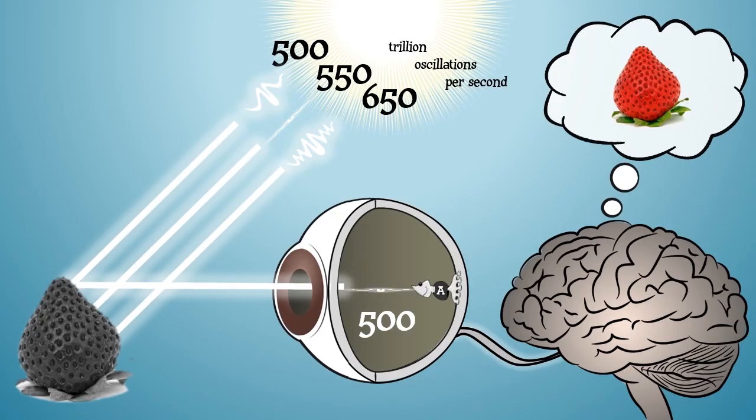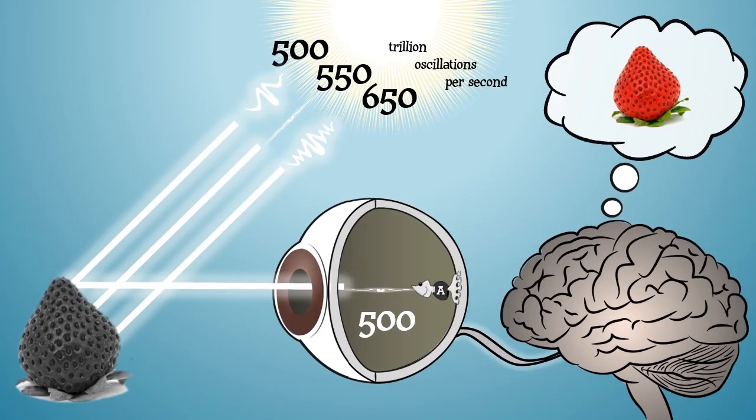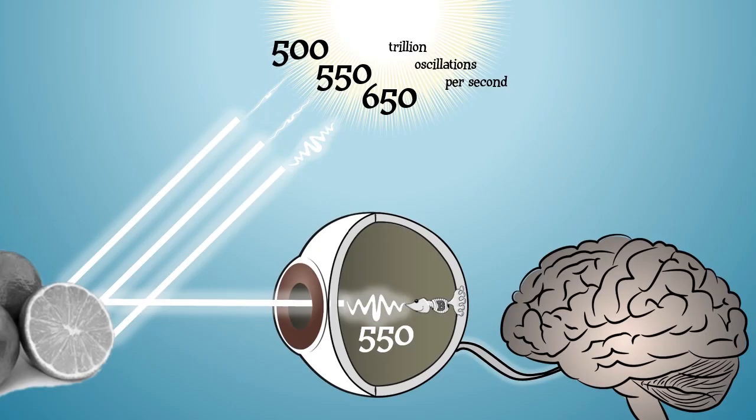A lime contains different chemical compounds than a strawberry. It absorbs photons that have frequencies below 500 and above 600 trillion oscillations per second, and reflects photons that oscillate around 550 trillion times per second, exactly what's needed to excite the cones in team B. So they react strongly, and the signal that is sent to the brain results in you seeing green.